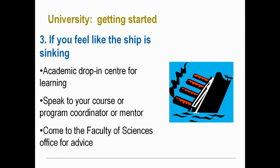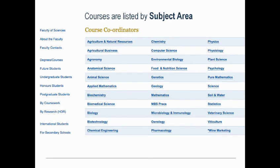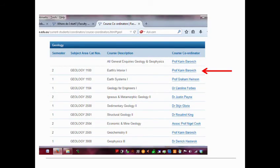If you're not doing so well, there are drop-in centers to get academic help. You can speak to course or program coordinators — you're all in a program and you all have a coordinator. You've got a mentor as well. Come to the Faculty of Sciences office. Course coordinators are really important. Most of you are taking four courses in a semester. You can find the course coordinator on MyUni or on the Faculty of Sciences web page, listed by subject area — for example, clicking geology you might find Prof Karen Berovich is the course coordinator for Earth's Interior.